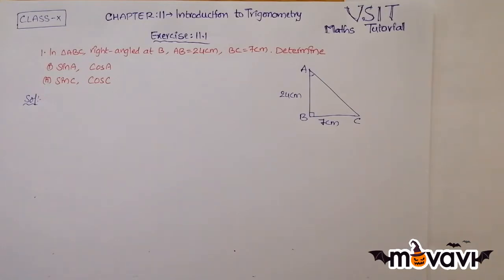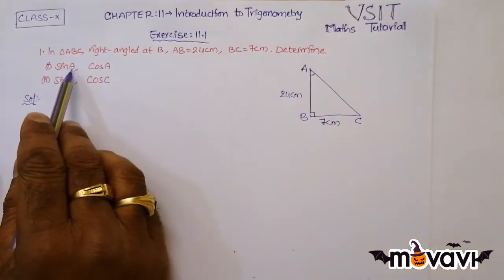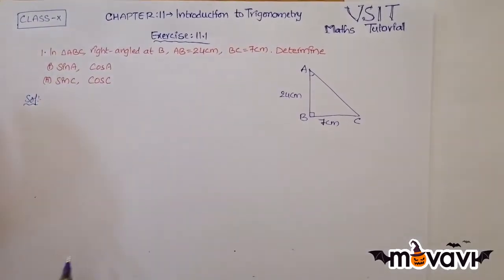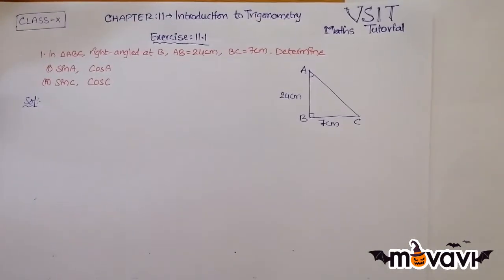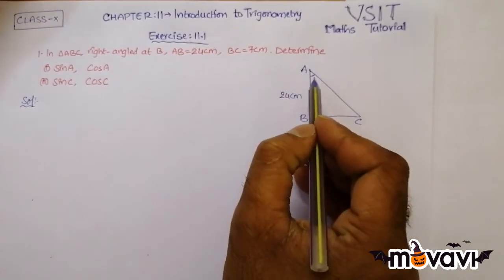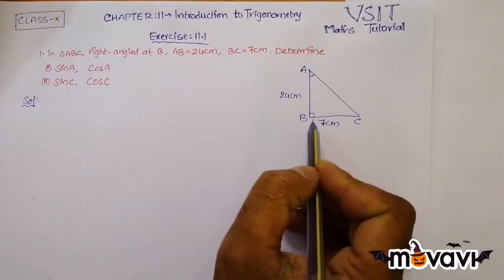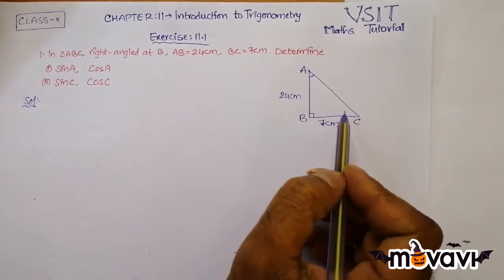Now, what is the ratio for sin A and cos A according to our problem? They ask you to find at angle A and angle C. Sin is nothing but opposite side over hypotenuse. If the angle is here, then the opposite side is the side which is opposite to this angle. BC is the opposite side to angle A, and AC is nothing but the hypotenuse.